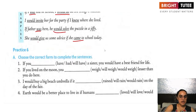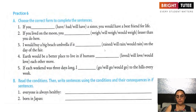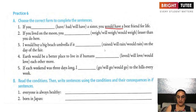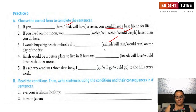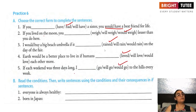Let us solve questions. Choose the correct form to complete the sentences. 'If you had a sister, you would have a best friend for life.' 'If you lived on the moon, you would weigh lesser than you do here.' 'I would buy a big beach umbrella if it rained on the day of the fair.' 'Earth would be a better place to live in if humans loved each other more.' 'If each weekend was three days long, I would go to the hills every week.'